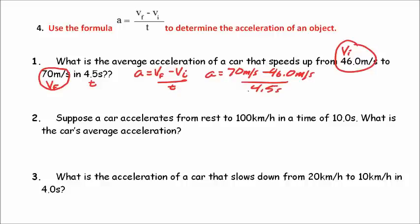When we work this out, we get 5.3 meters per second per second. So our answer is: acceleration equals 5.3 meters per second per second, which we can also write as 5.3 meters per second squared.